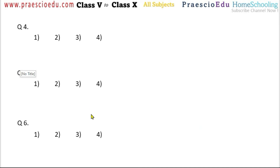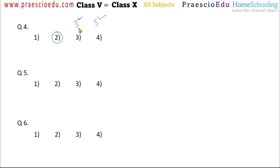Question number 4: which number is divisible by both 3 and 5? All four options have unit digits of 0 or 5, so all are divisible by 5. We only need to check divisibility by 3 — the digit sum must be a multiple of 3. Checking all options, option number 2 has a digit sum that is a multiple of 3, so option number 2 is correct.